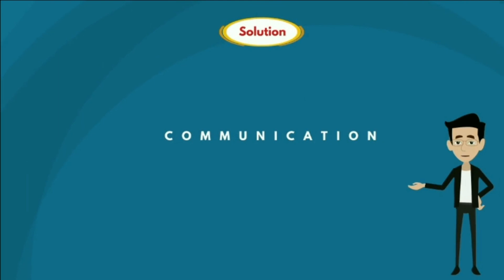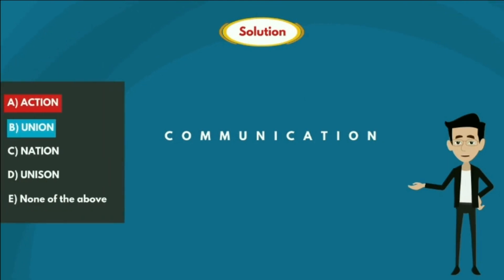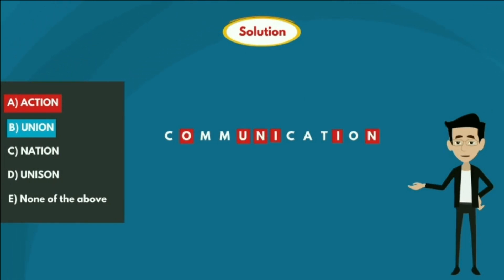Option B: UNION. If we observe the given option, all the letters U, N, I, O, N are present in the given word COMMUNICATION. So option B is false.